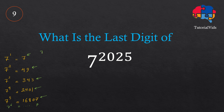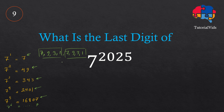The pattern is: first 7, then 9, then 3, then 1, and again 7, 9, 3, 1. So if I calculate 7 to the power of 8, for example, then the last digit of that number would be 1.